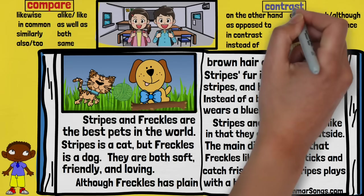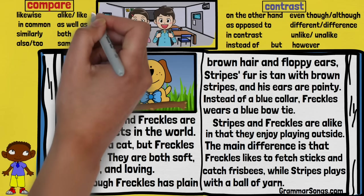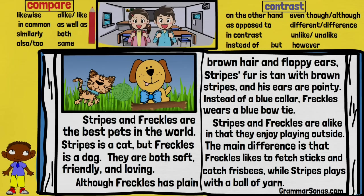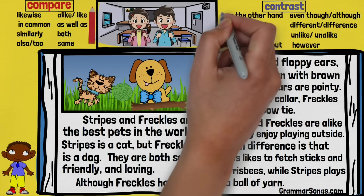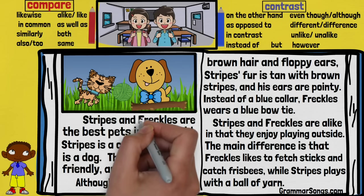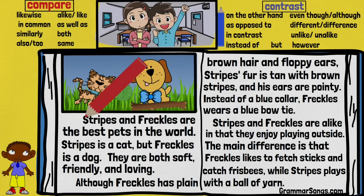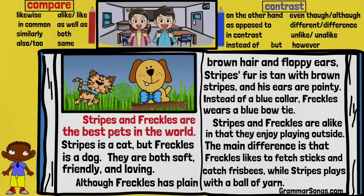He compared and contrasted them in many ways and even used some signal words. Let's reread Zeke's writing to look for examples of comparing and contrasting. When the statement shows how Stripes and Freckles are alike, we will highlight the sentence in red. When the statement shows how they are different, we will highlight the sentence in blue. And don't forget to look for signal words — we can circle them along the way. 'Stripes and Freckles are the best pets in the world' — there are no signal words, but he's comparing how they are both the best pets in the world.